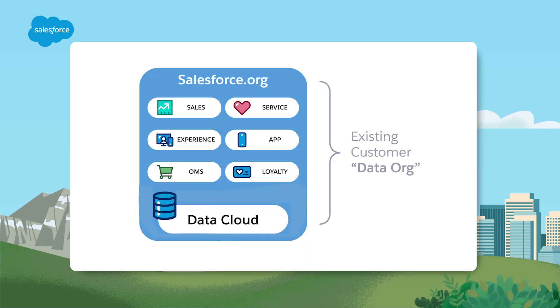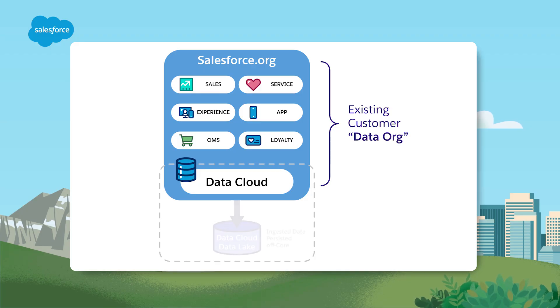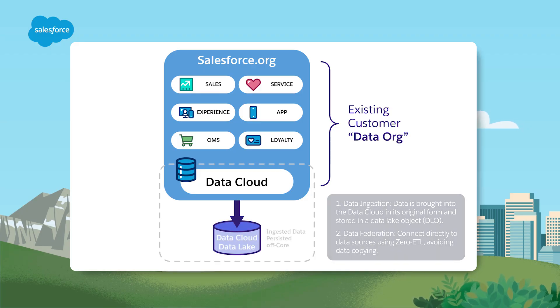Provisioning Data Cloud in an existing org makes sense when your company has a single line of business and a single Salesforce org, and your primary use cases require out-of-the-box Data Cloud Lightning Web Components, or LWCs, and search capabilities for service agents. When provisioning Data Cloud in an existing org, keep in mind that a single Data Cloud instance can still connect to multiple different Salesforce core orgs if you need to, and the data lake will still separately persist and ingest data off-core.